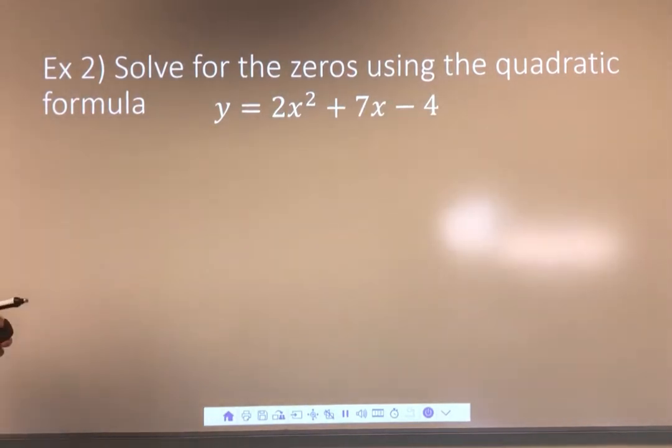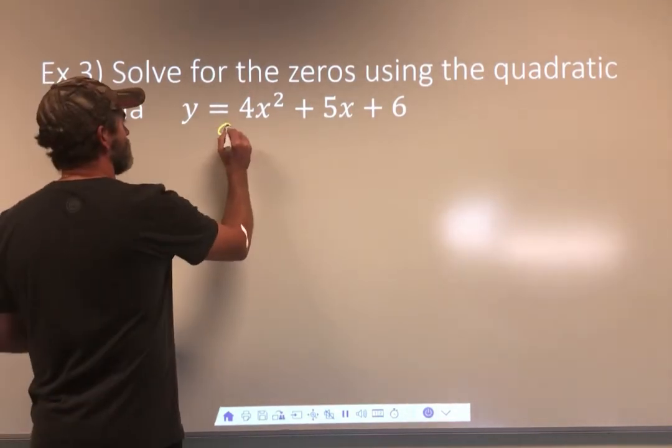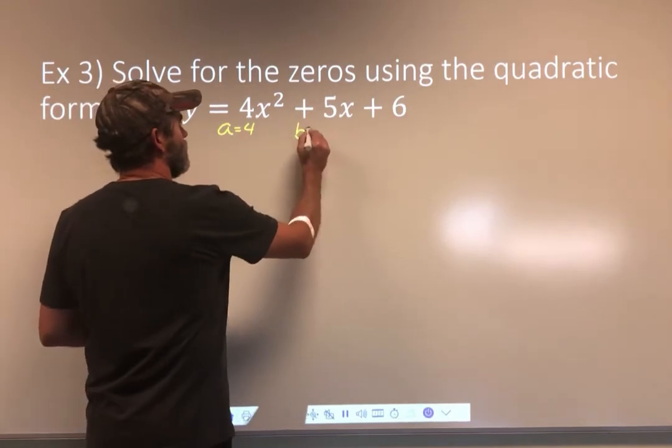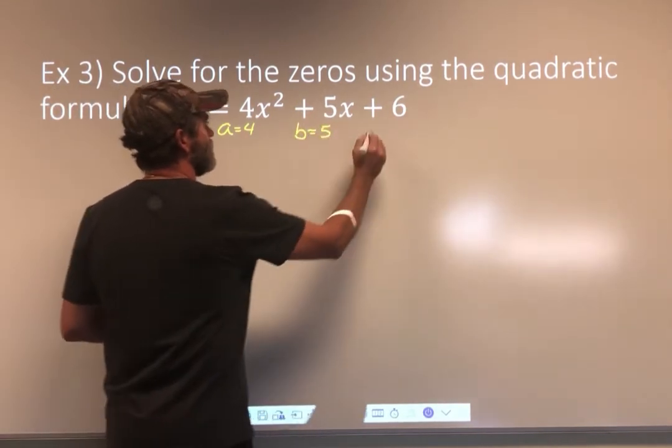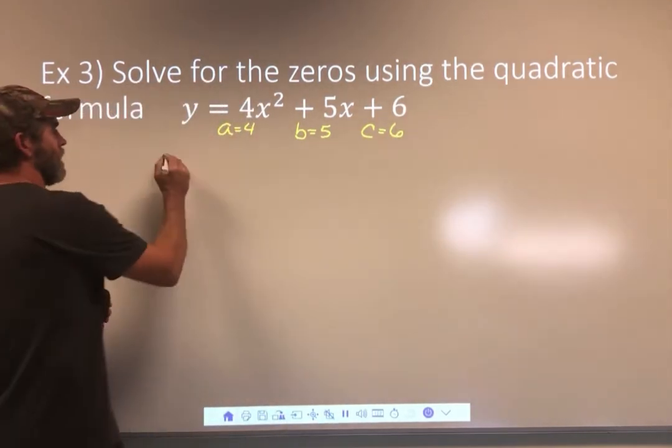This thing crosses the x-axis twice. It's going to cross it at 1 half and negative 4. So we could finish the problem. It wasn't left irrational or imaginary. So we want to close the deal. Two more examples. Just working through the same process. Let's identify A. A is 4. B is 5. And C is 6.